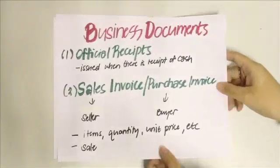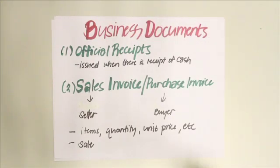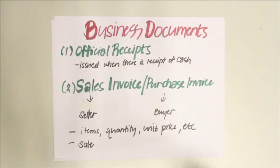Now we look at the business documents involved in a merchandising concern. First are the official receipts, or ORs, which are documents you issue when there is a receipt of cash. Then we have sales invoices or purchase invoices — basically the same thing, varying by perspective. If you're a seller, it's a sales invoice; if you're a buyer, it's a purchase invoice. These documents state the items, quantity, unit price, total sales or purchases, and other details.